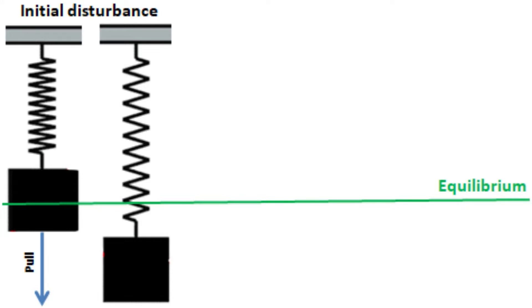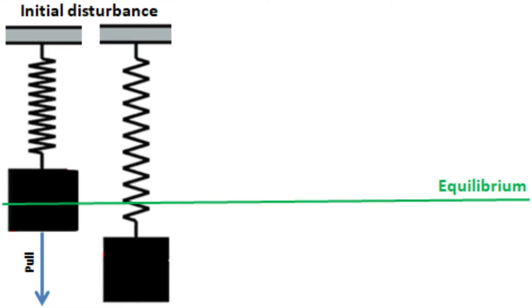What happens exactly whenever we disturb the object? Now the real magic starts. Due to elasticity, the object tries to maintain equilibrium by using restoring force. A restoring force is any force that always acts to pull the system back towards equilibrium.